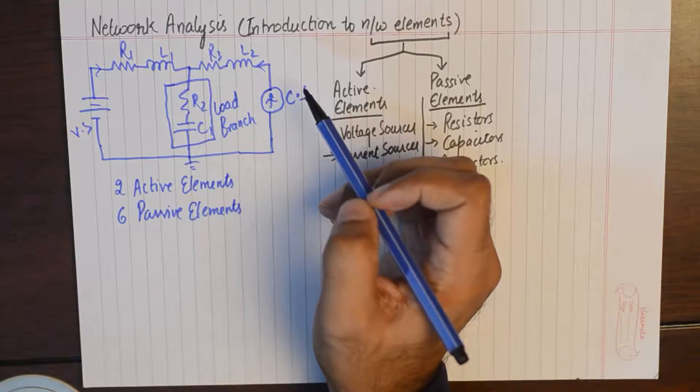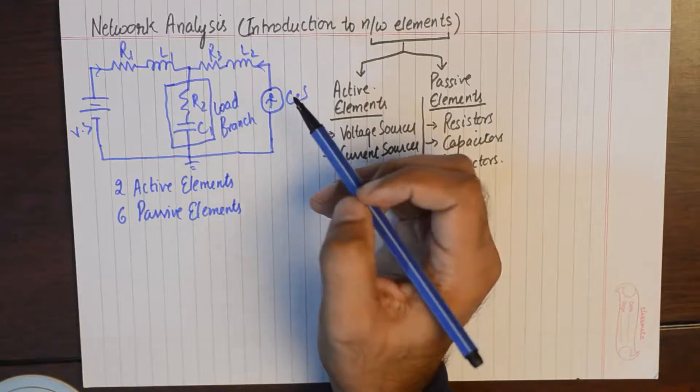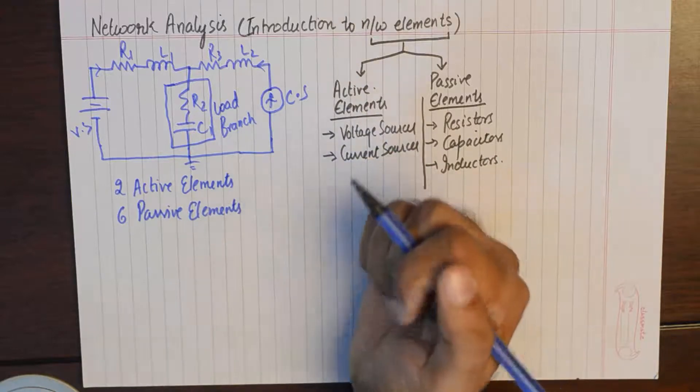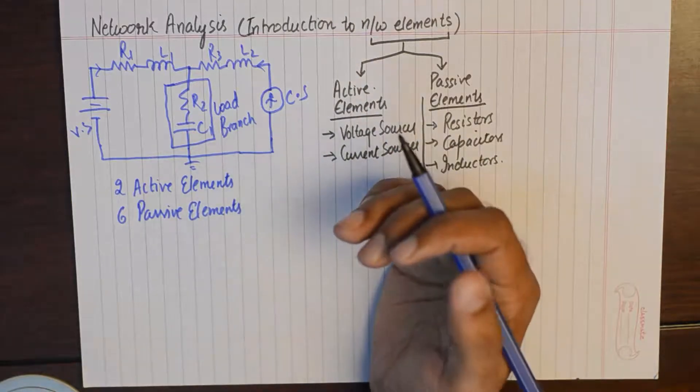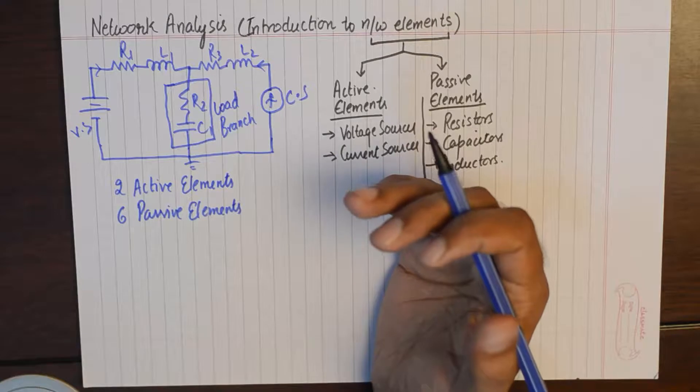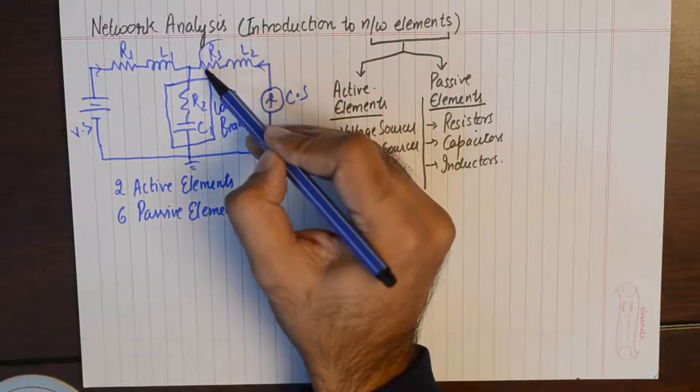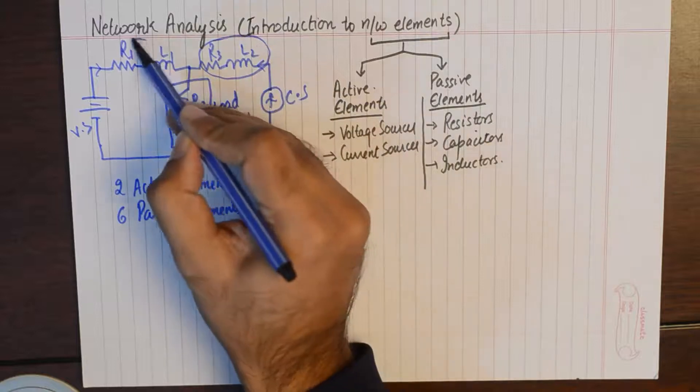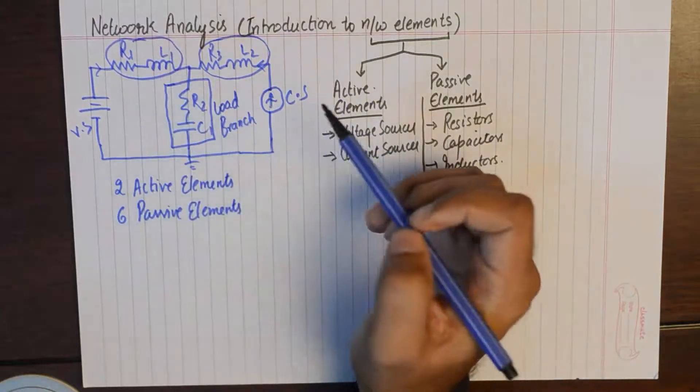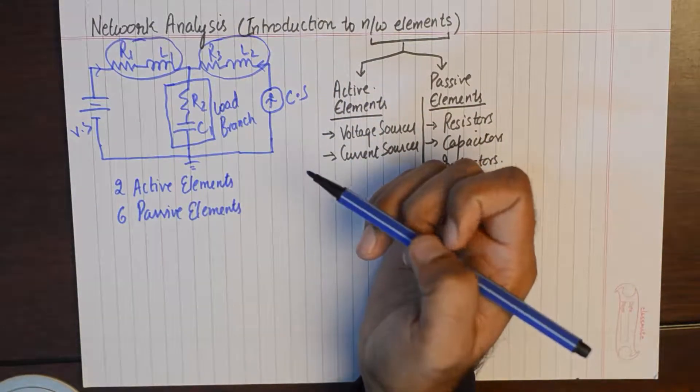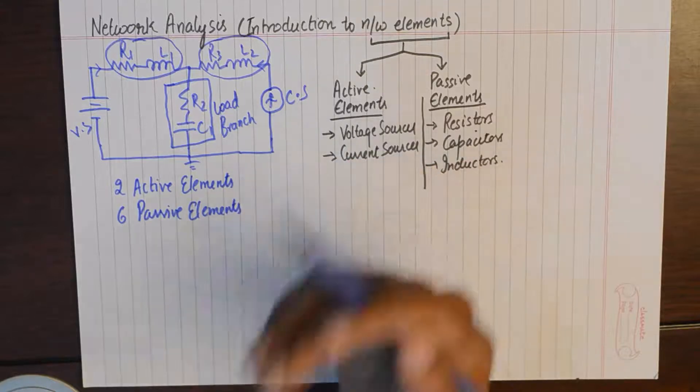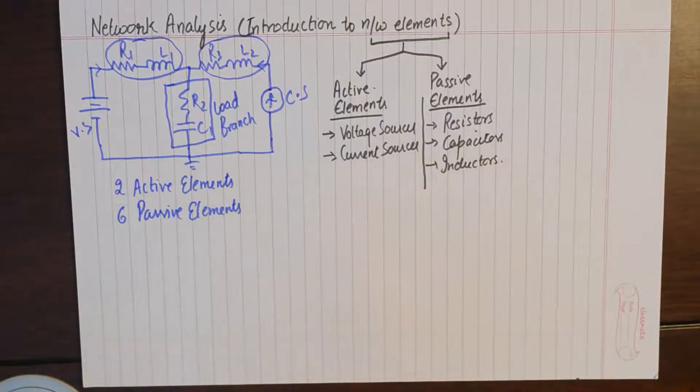And while doing so, we would also want some kind of control over our supplied power. That is why we have put in some controlling and limiting elements in the branches which are containing the sources. So that is how we need to interpret a network.